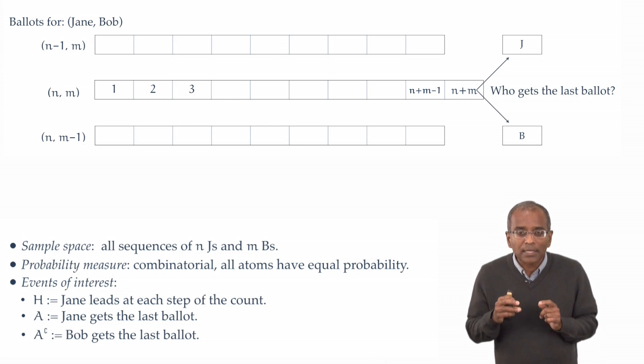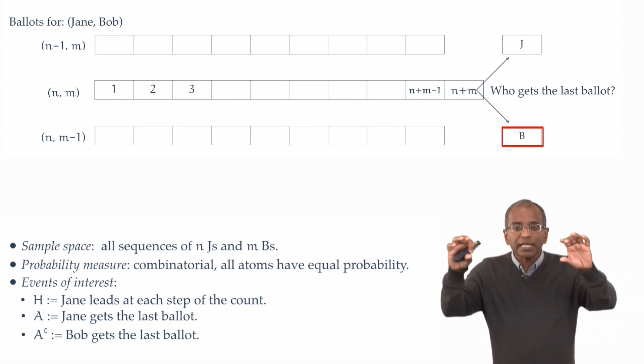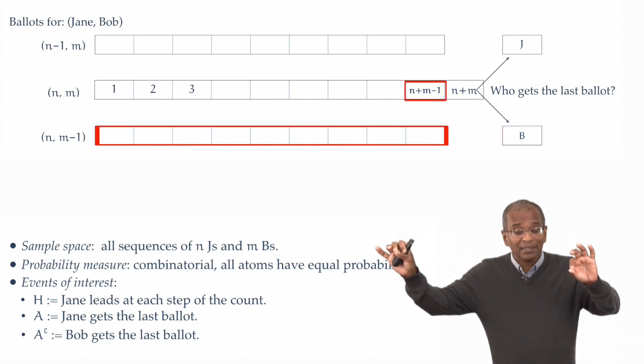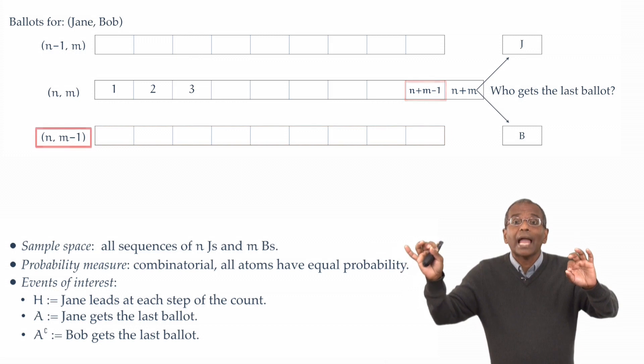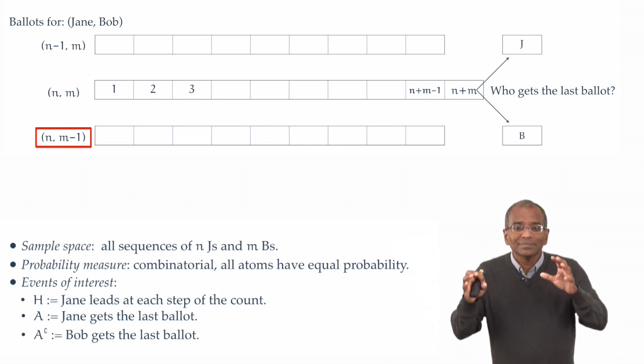If, on the other hand, Bob gets the last ballot, then of the first n plus m minus 1 ballots, Jane still has to get n, but Bob now gets m minus 1. This is our picture.